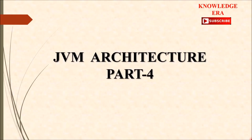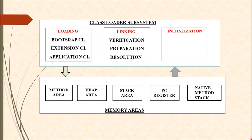Hello friends, welcome back to our channel Knowledge Era. In this video I will explain all the memory areas present inside JVM architecture. Basically there are five types of memory areas: method area, heap area, stack area, PC register, and native method stack. I will explain each memory area one by one.